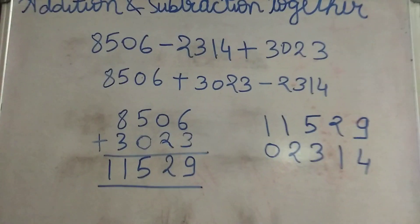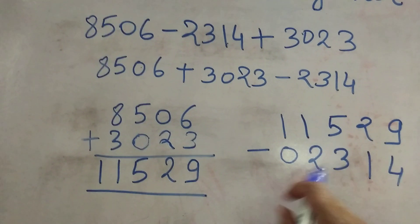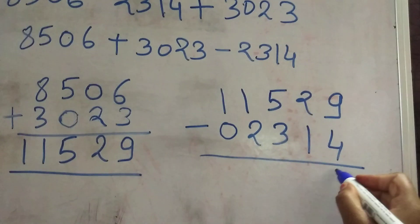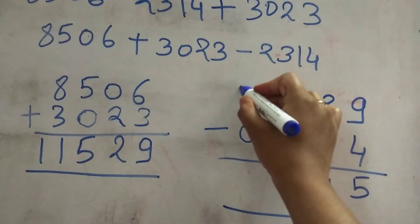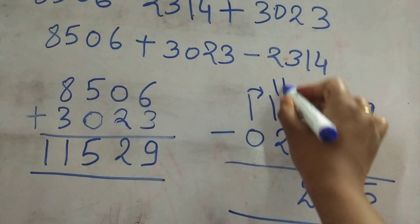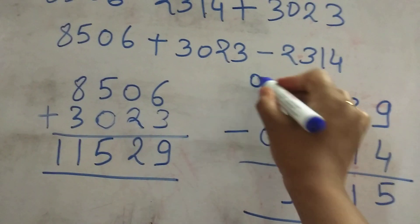Now this number carries the subtraction sign. We have to subtract. 9 minus 4 is 5, 2 minus 1 is 1, 5 minus 3 is 2. We will borrow. 11 minus 2 is 9. Here 0 is remaining, 0 subtracted by 0 will be 0.